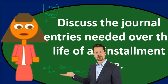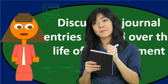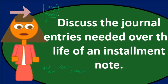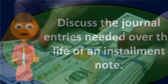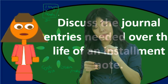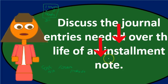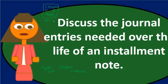With a bond, you pay rent on the purchasing power of $100,000 and then pay back the entire $100,000 principal at the end. With an installment note, it's like giving back a portion of the space each period — we're paying back some principal each time along with some interest, and most installment notes are structured to have even payments throughout.